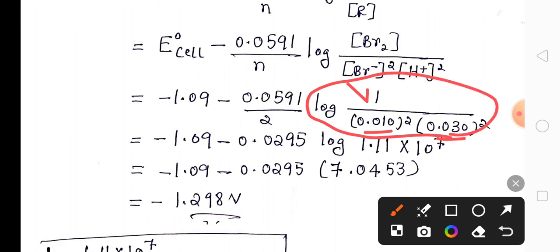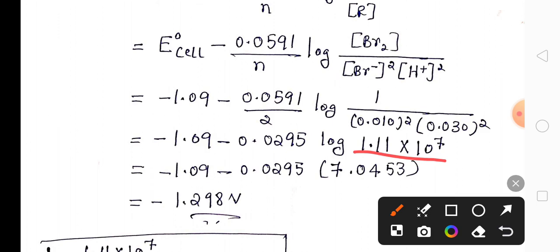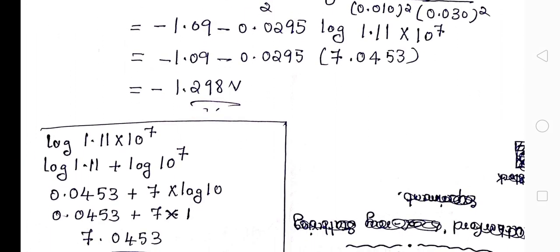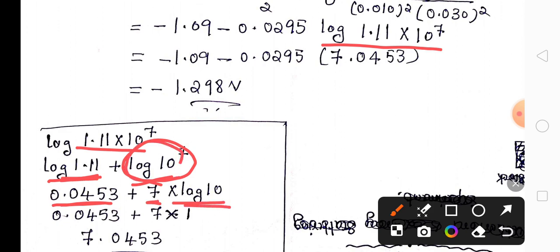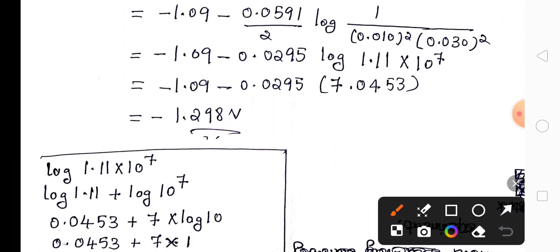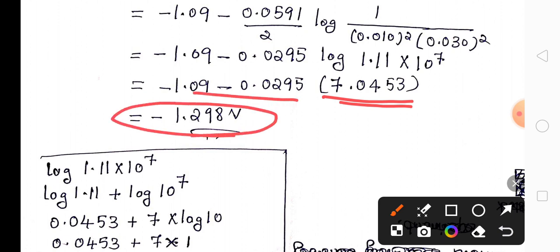Substituting: Br₂ concentration is 1, Br⁻ is 0.010 raised to power 2, and H⁺ is 0.030 raised to power 2. When we calculate this we get log(1.11 × 10⁷). Using log(a × b) = log a + log b: log(1.11) + log(10⁷) = 0.0453 + 7 × log(10) = 0.0453 + 7 = 7.0453.